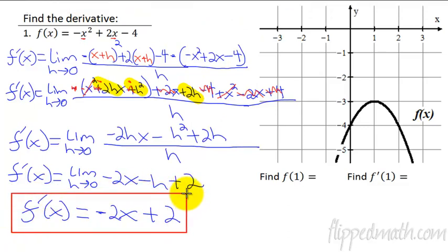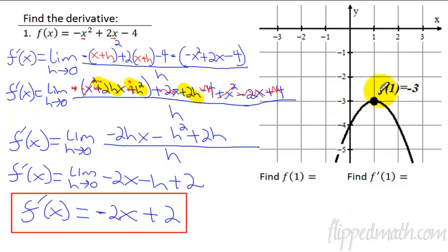What in the world does that do for us? What the derivative does is it gives us an equation in which you can now find the slope of the tangent line. Let's do this f of 1 and f prime of 1. On your graph, I want you to put this on there. f of 1 equals negative 3. So just plot this point. x equals 1, y equals negative 3 is just a coordinate point.